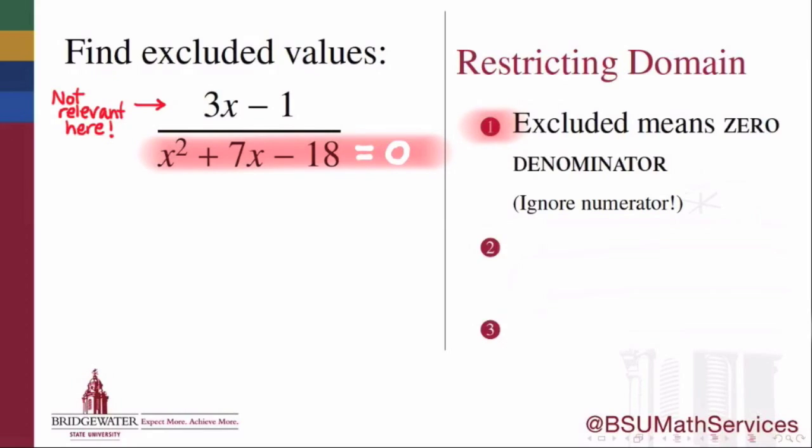So in the actual work that we do, the x squared plus 7x minus 18 in the denominator is something that we'll work with, but the 3x minus 1 in the numerator is not relevant at all to our decision making in finding excluded values. So we can ignore the numerator and focus completely on the denominator.